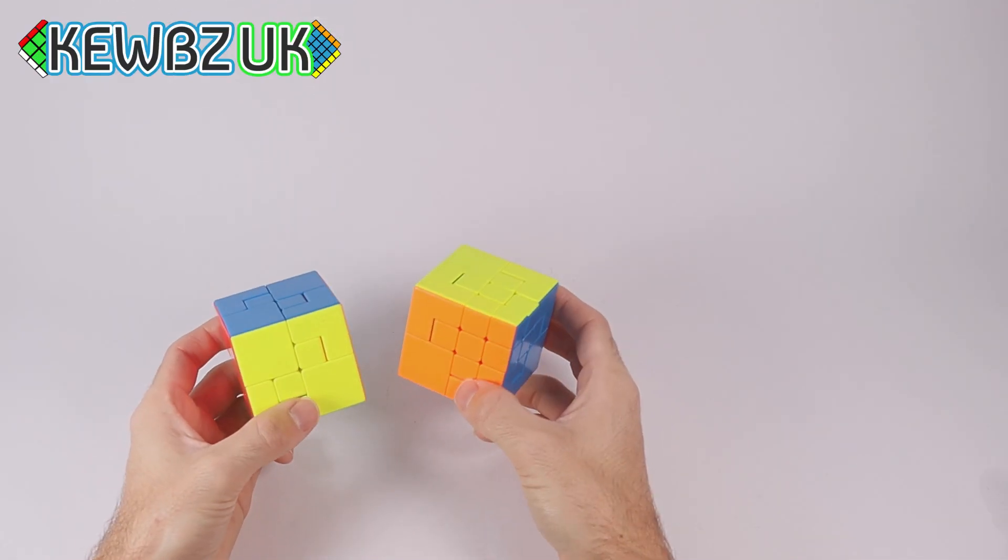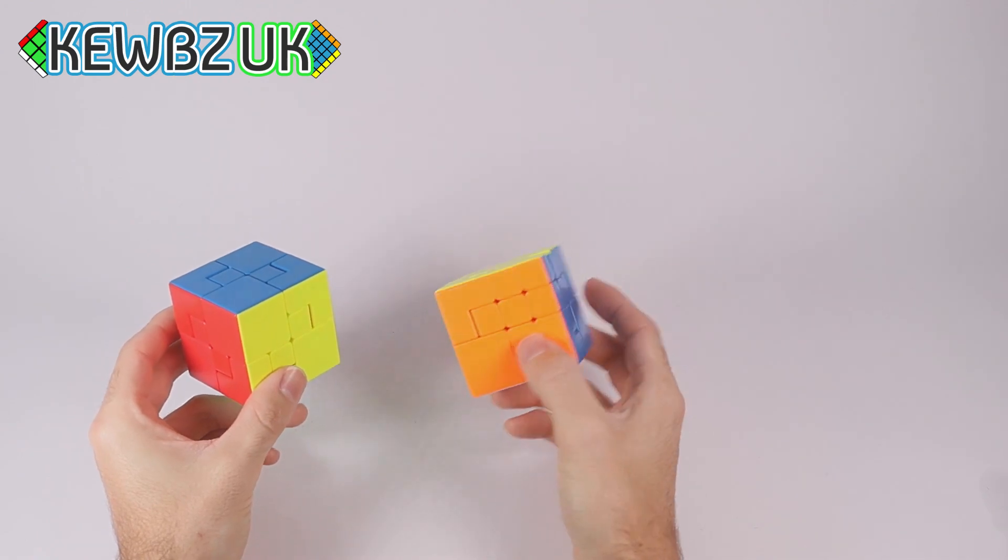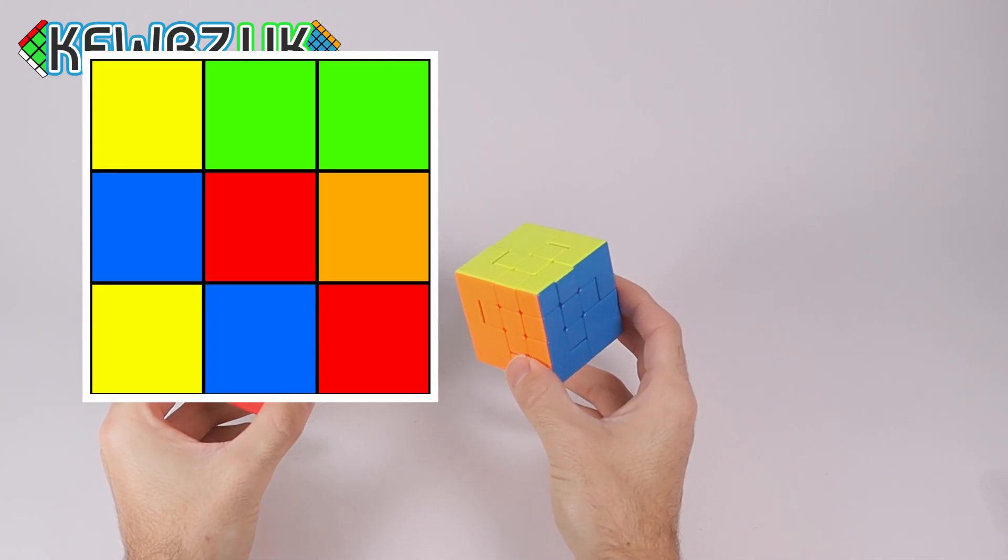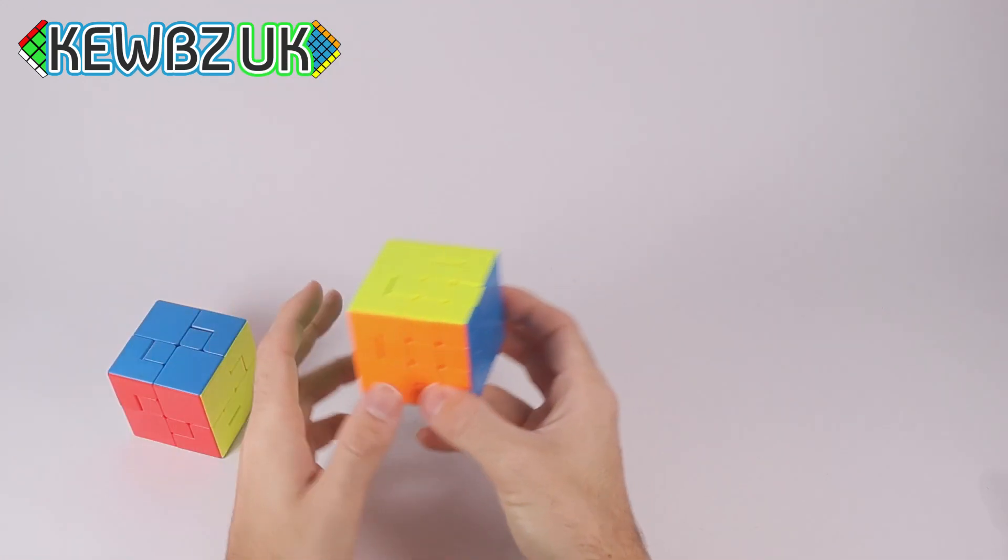Okay, so these are the brand new Moyu Meilong Puppet series. We've got the Moyu Puppet 1 and the Puppet 2 and they can best be described as a 3x3 inside a 2x2. Well, this one anyway, which is the Puppet 2.